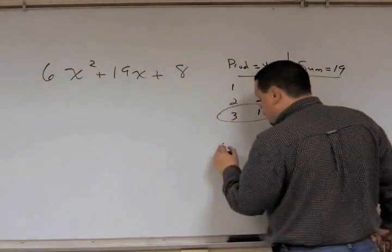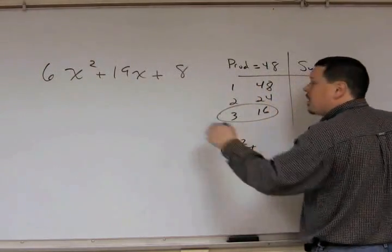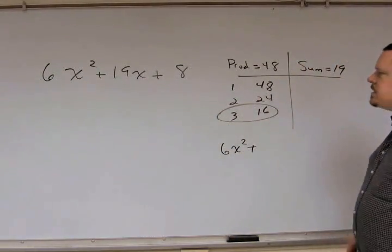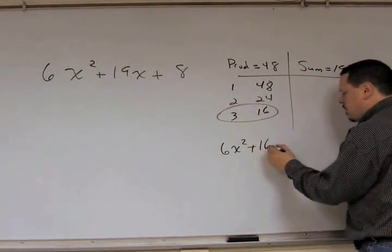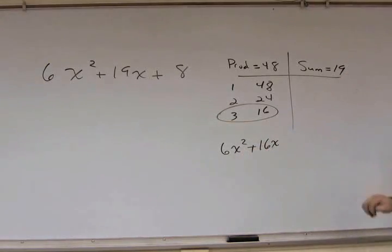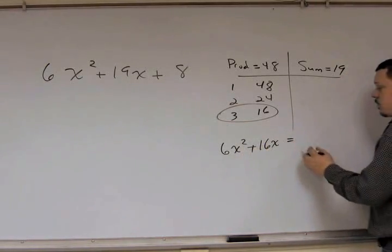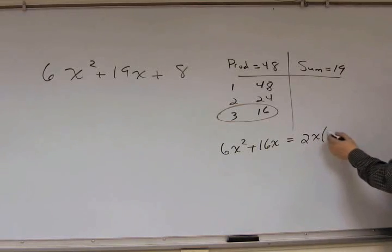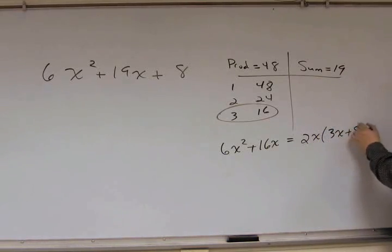So, now you write down your first term, 6x squared, plus your second term. Except we are going to replace the 19 with 16. So, 6x squared plus 16x. Factor out your GCF, which in this case is 2x. And what you have left over is 3x plus 8.